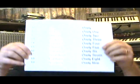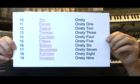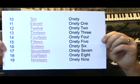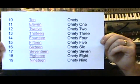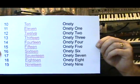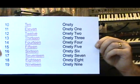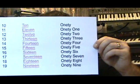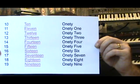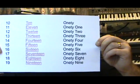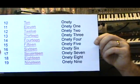On this sheet of paper I've detailed how these numbers should be logically renamed. 10 becomes 1T, 11 becomes 1T1, 12 becomes 1T2, 13 becomes 1T3, then 1T4, 1T5, 1T6, 1T7, 1T8, 1T9, and then of course 2T.